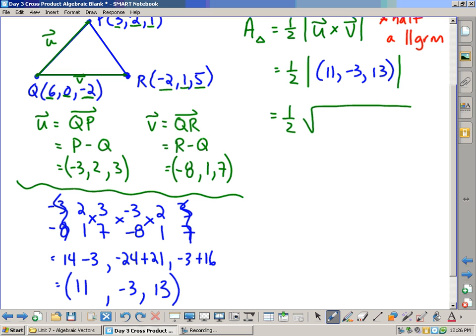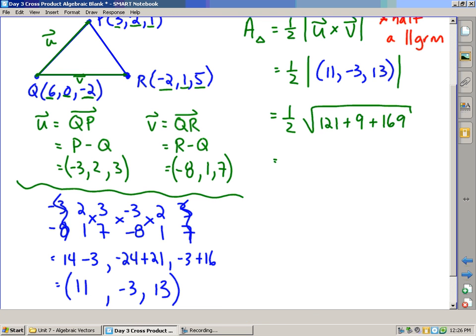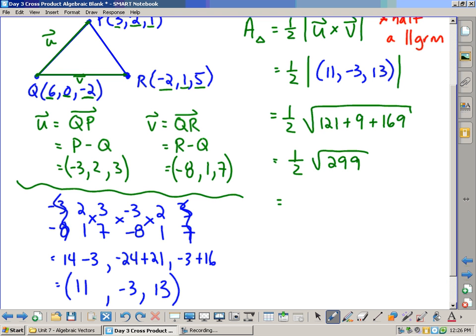So we go off and we take the square root of 11 squared, which is 121, plus the square root of negative 3 squared is 9, plus 13 squared is 169. 121 plus 9 plus 169 is 299. The square root of 299 is some decimal, divided by 2, or multiplied by 0.5, and we get an answer of 8.65 units squared. I don't have any meters or anything here, so we're just going to call it units squared.